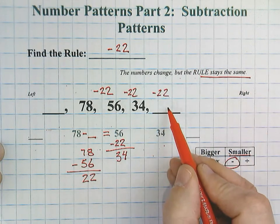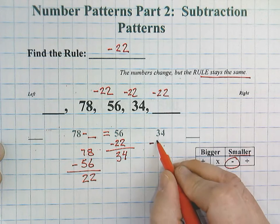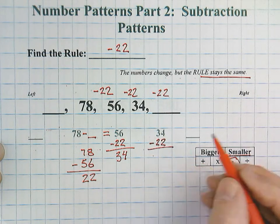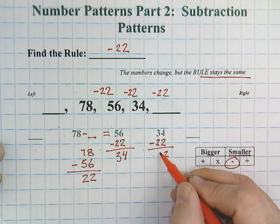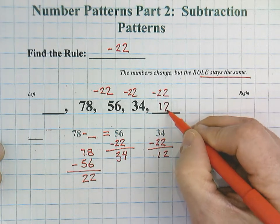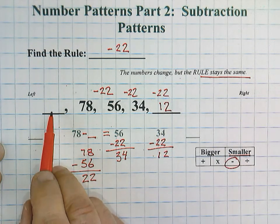Our job now is to find the blank. So, it's going to be 34 minus 22. 4 minus 2 is 2. 3 minus 2 is 1. So, our last number here on the right side would be 12. But we still have this one over here.